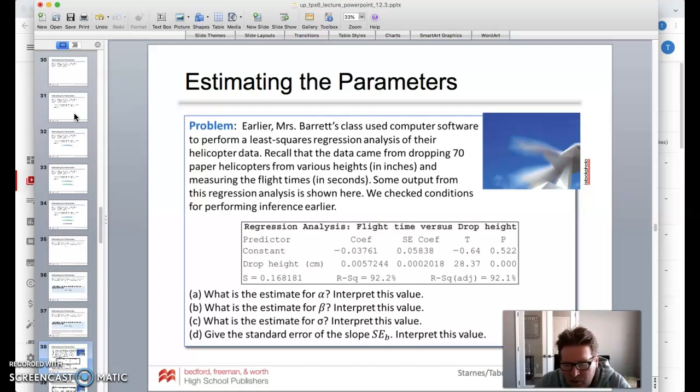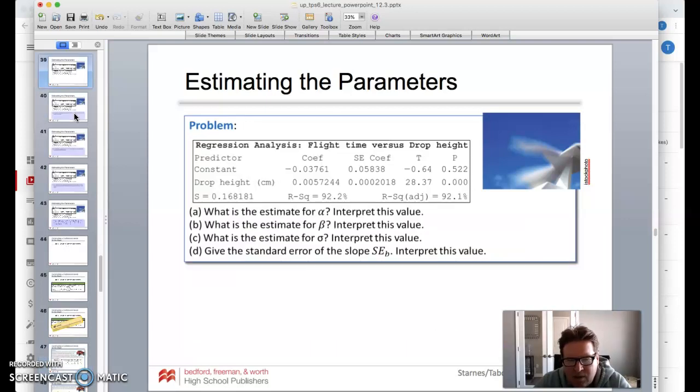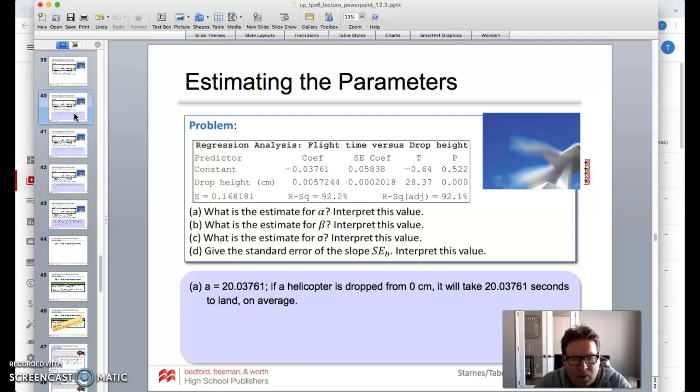The estimate for alpha, we would use the A from our sample, which is 0.0376. If the helicopters drop from zero centimeters, it'll take 20 seconds to land on average. That's kind of a weird type of thing.